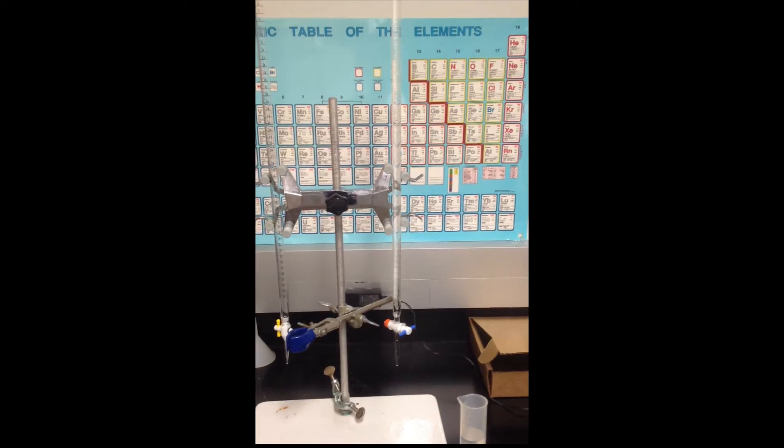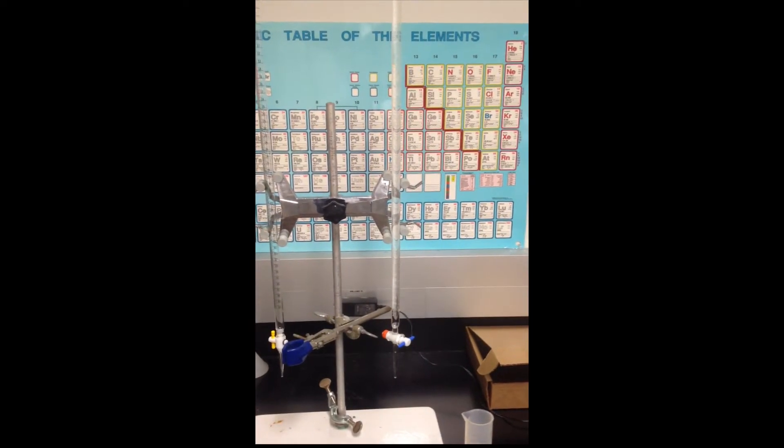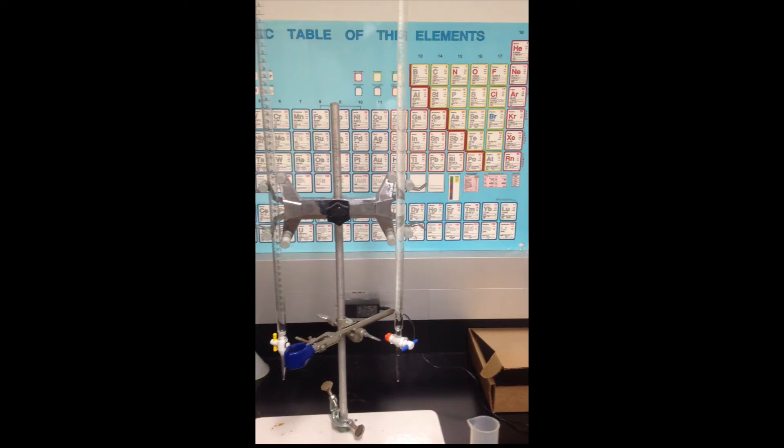Bromocresol green indicator, a 250 ml flask which is going to hold our analyte, the sodium carbonate with water, and then a burette with 50 ml of that 0.1 molar hydrochloric acid solution in it.